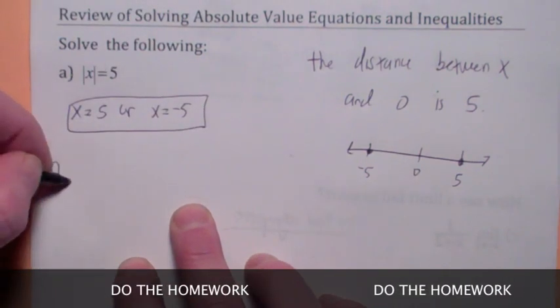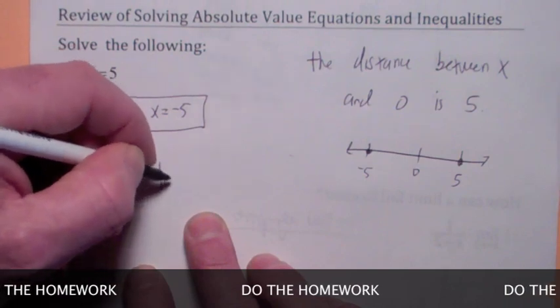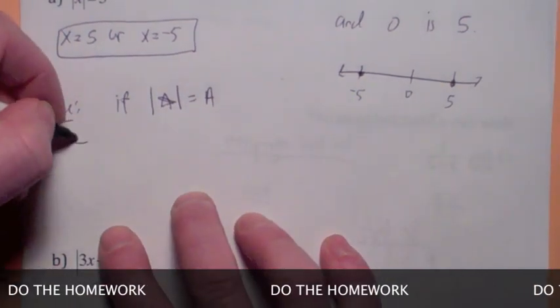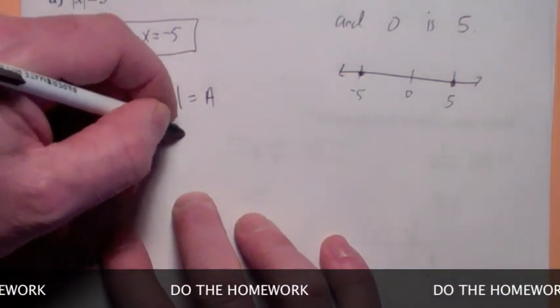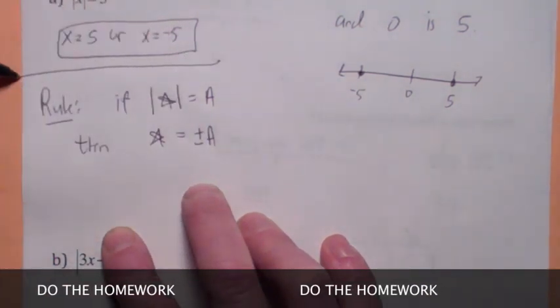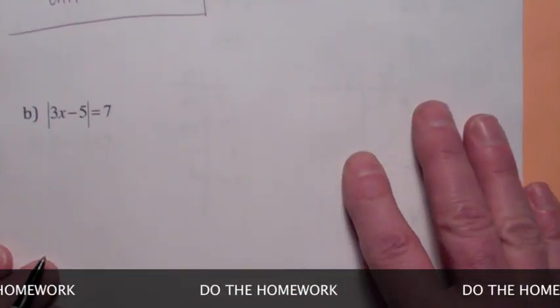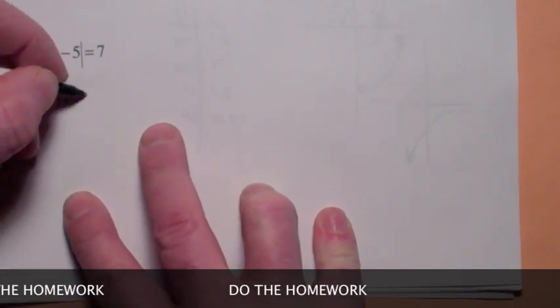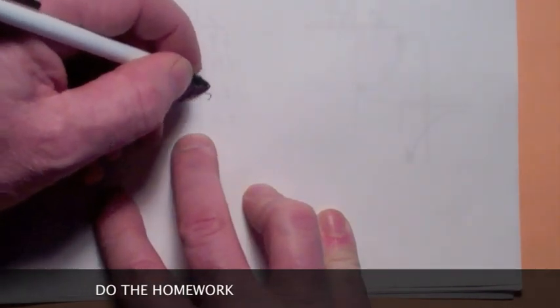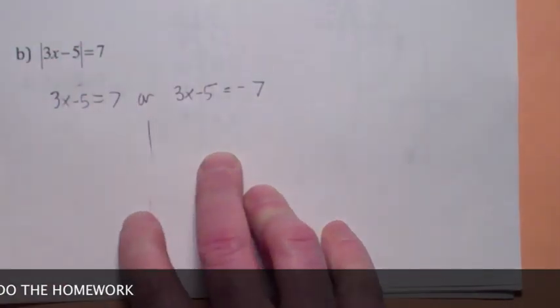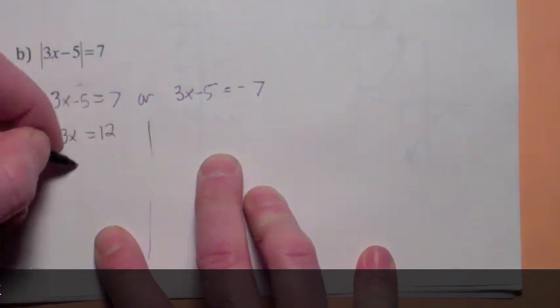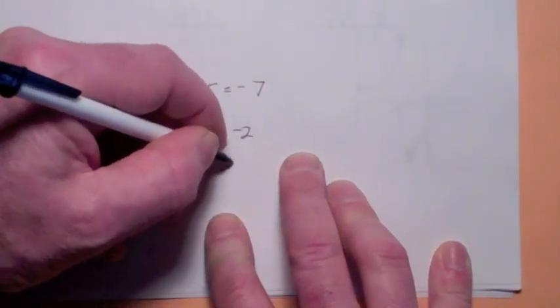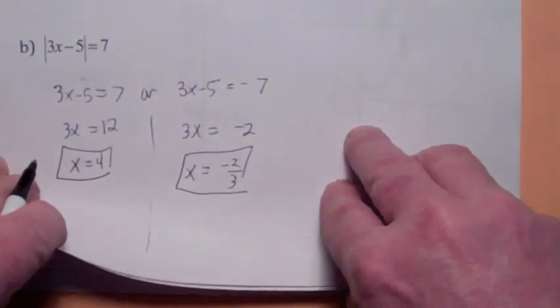And in general, the rule, the basic rule says if you have the absolute value of anything equaling a number, a has to be greater than or equal to 0, then what's inside the absolute values either equals a or negative a, plus or minus a. That's the basic rule. So when you solve this equation, what's inside the absolute values has to equal 7 or 3x minus 5 equals negative 7. And then you solve each of these separately. So if you add 5 to both sides, you get 3x equals 12, x equals 4. Over here, you get 3x equals negative 2, so x equals negative 2 thirds.